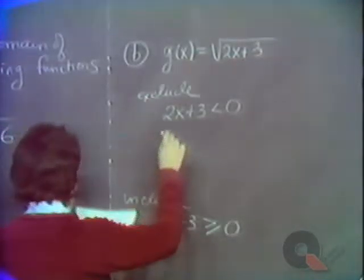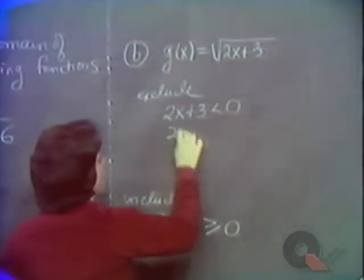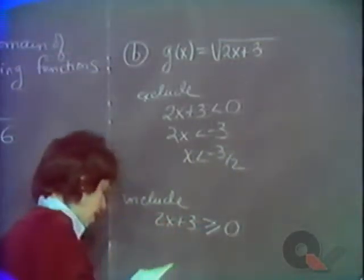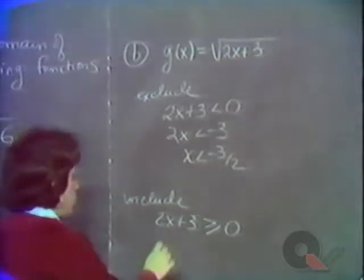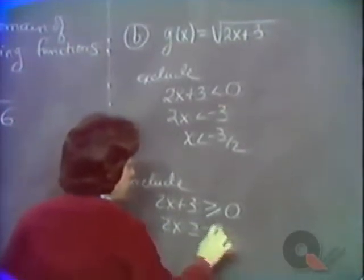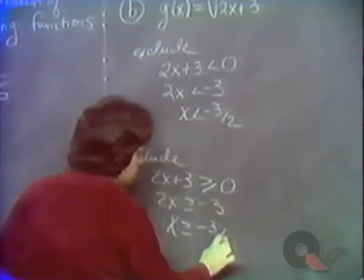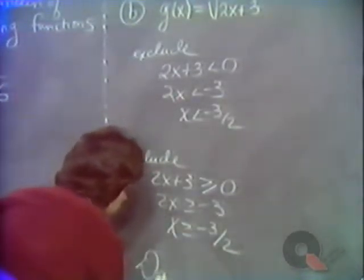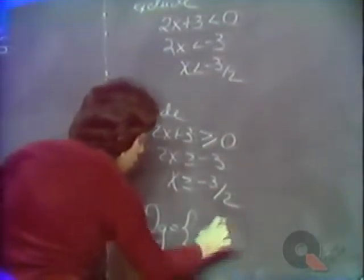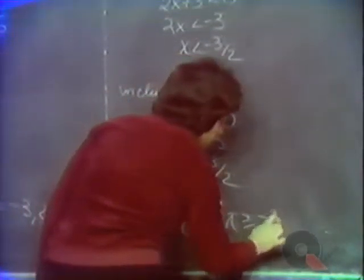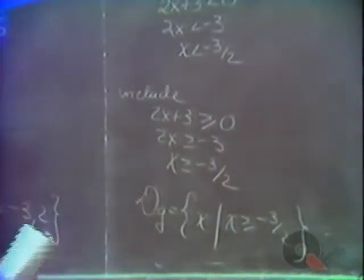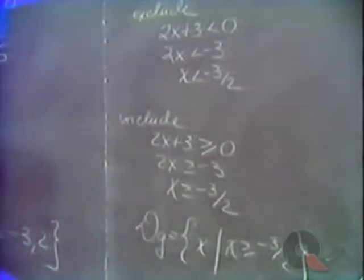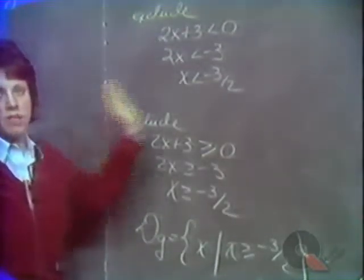Solving this inequality, we get 2x is less than minus 3, so x less than minus 3 halves is to be excluded. Or using the alternate approach: 2x greater than or equal to minus 3, so x greater than or equal to minus 3 halves is to be included, giving us the domain of g — all x such that x is greater than or equal to minus 3 halves. The values to be included in the domain are minus 3 halves and over to the right.